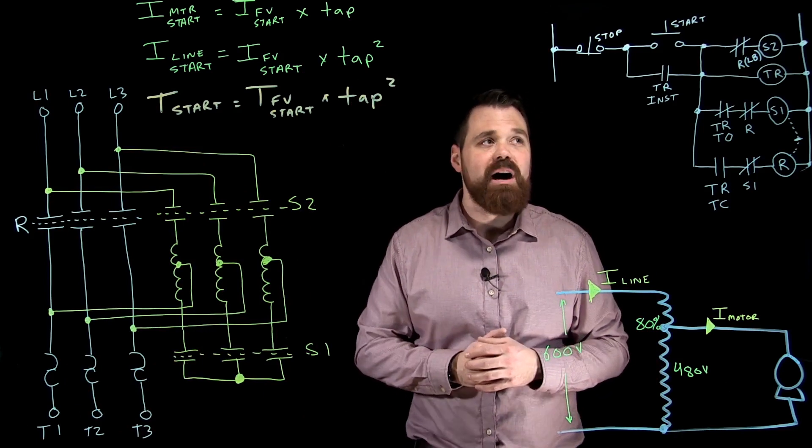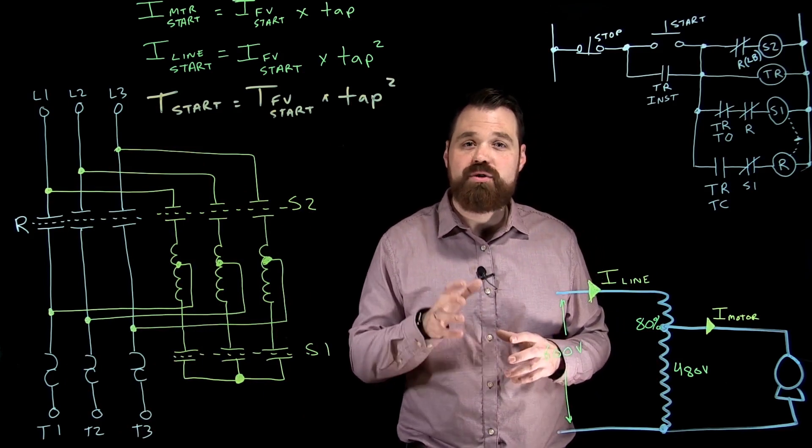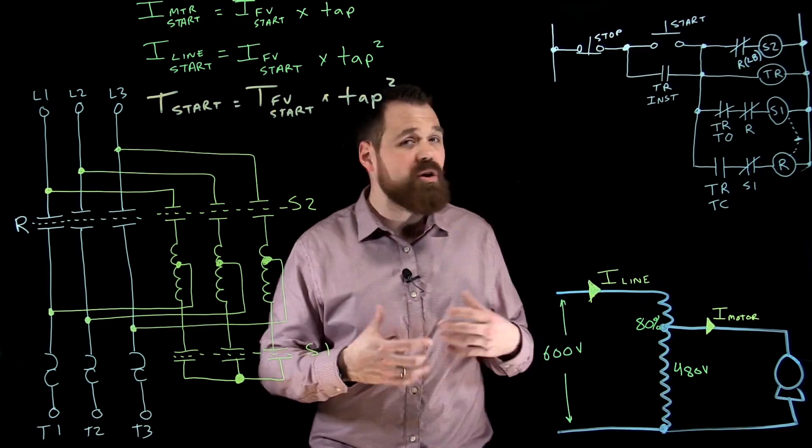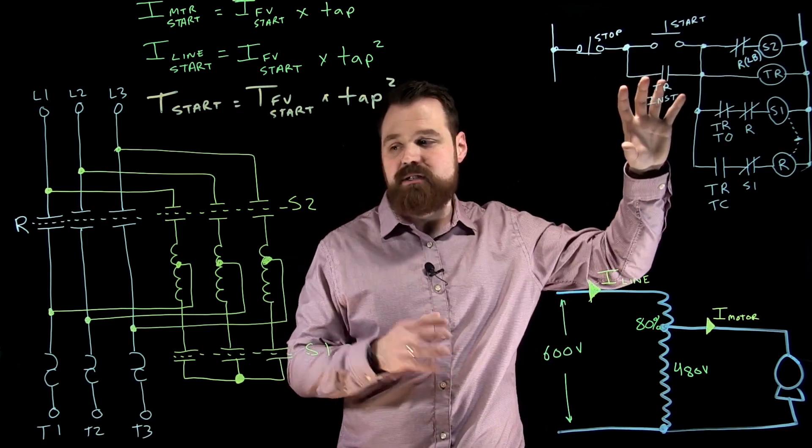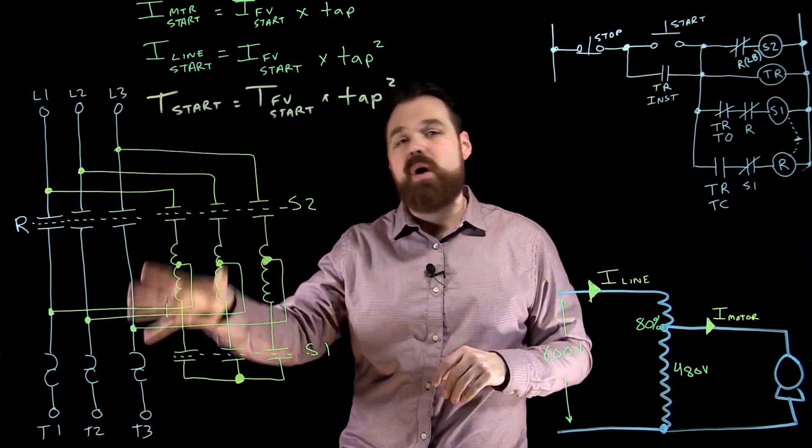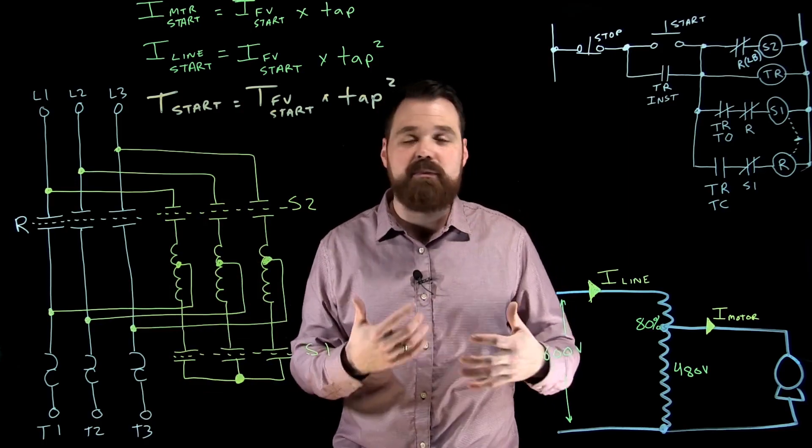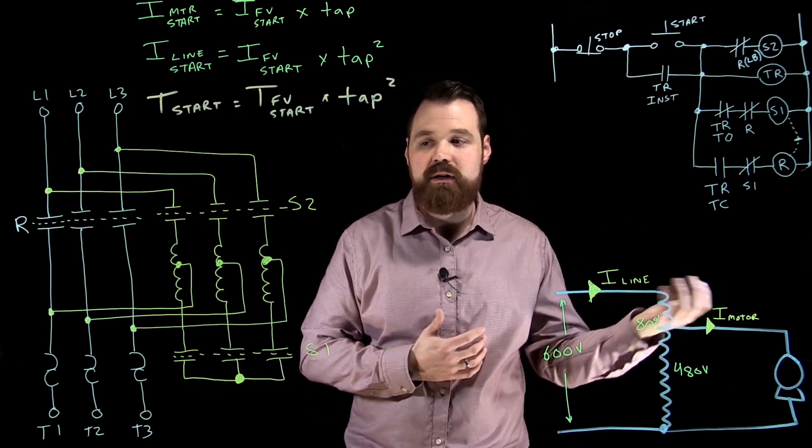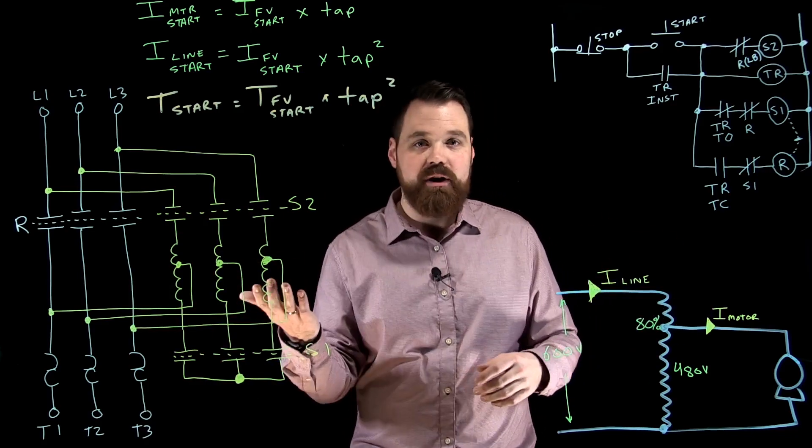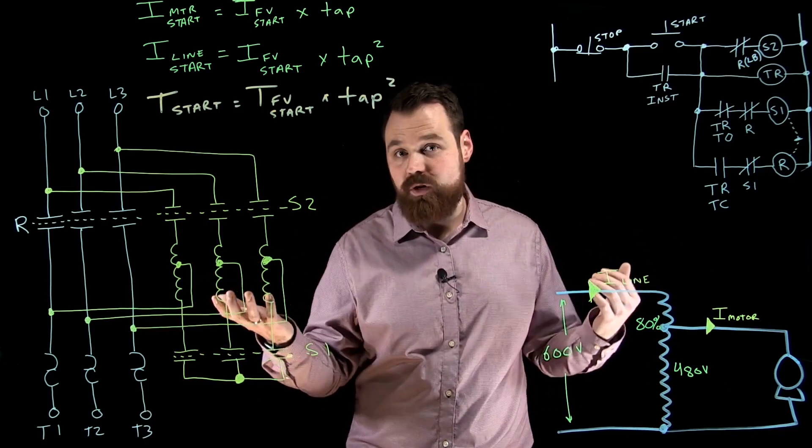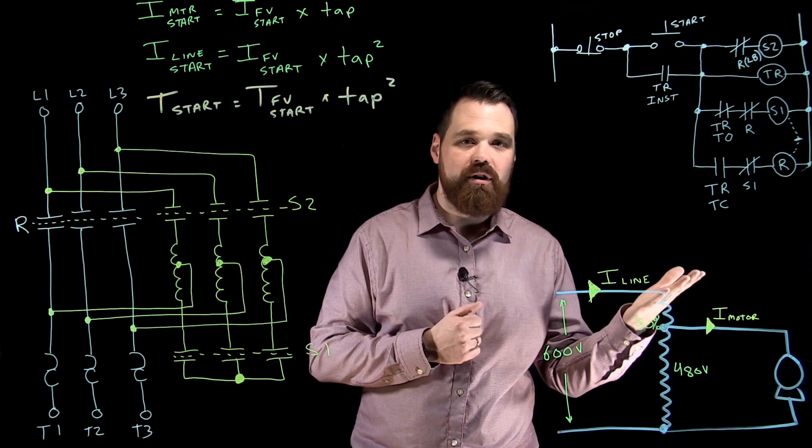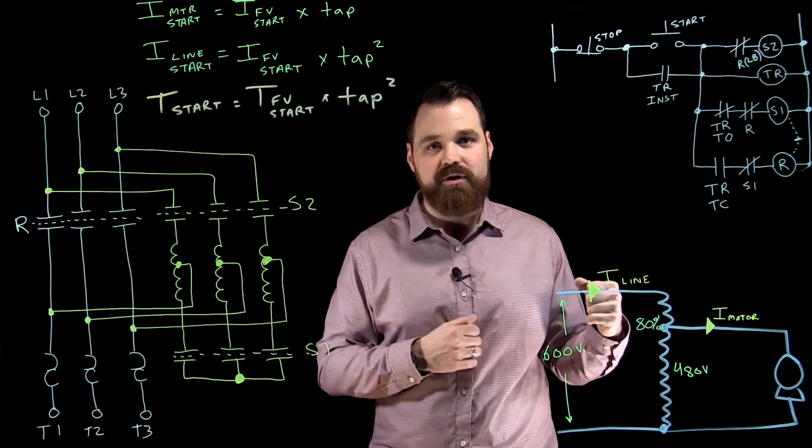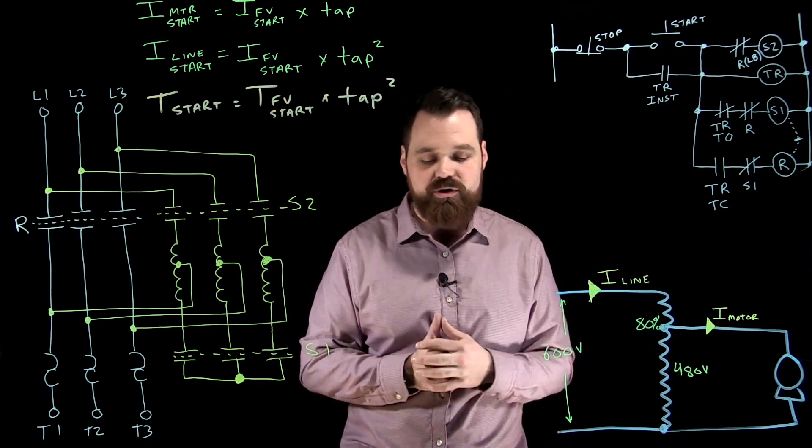Just two different options. We're going to talk about a closed transition here. With all of these, there are very different schematics and wiring diagrams, but they all work on a similar principle. Start with an autotransformer, then start running, remove the autotransformer for closed transition—or start with autotransformer, turn off the autotransformer and then start running.